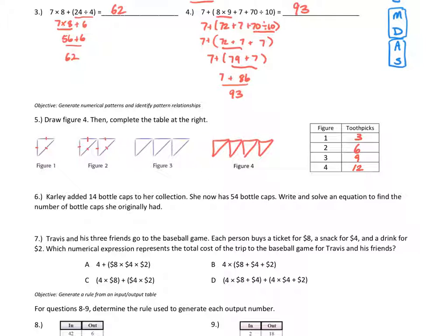Question six says Carly added 14 bottle caps to her collection and now has 54. We need to write and solve an equation to find how many she originally had. I'll call the original number C. So C plus 14 equals 54. To solve, I take 14 away from both sides: C equals 54 minus 14, which is 40.